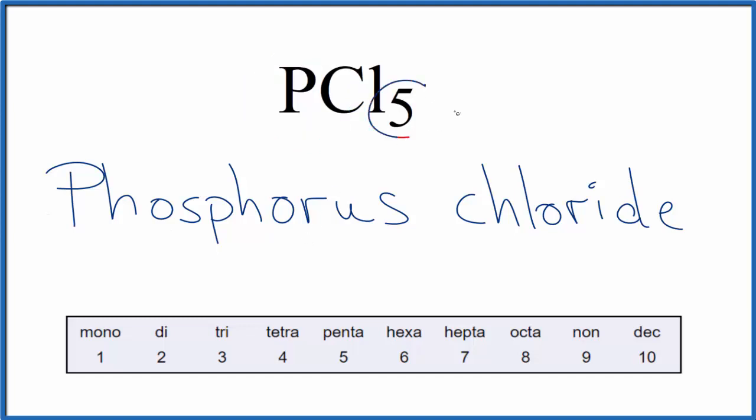For chlorine, we have a five. Five, we use the prefix penta. So we're going to write penta right here.